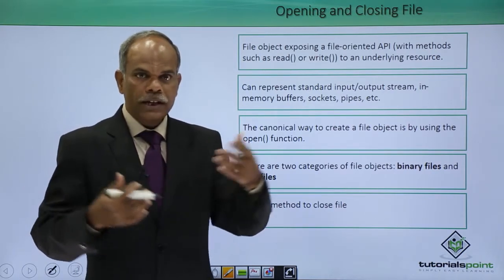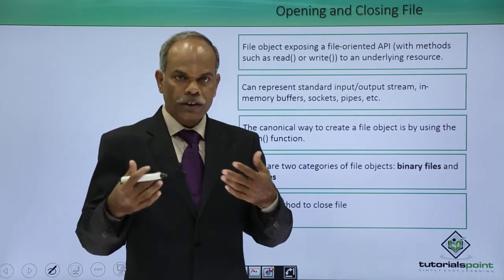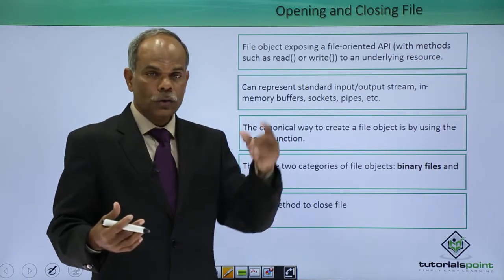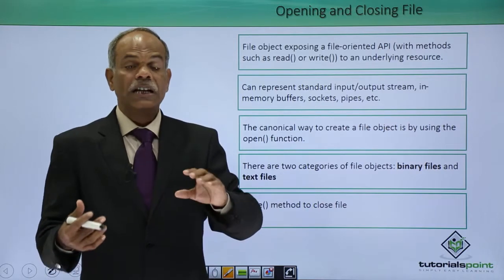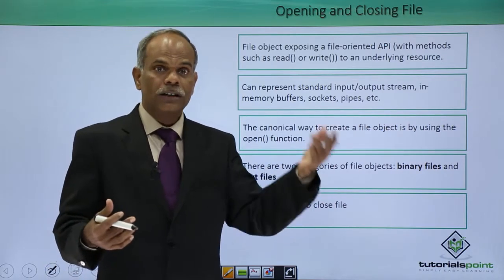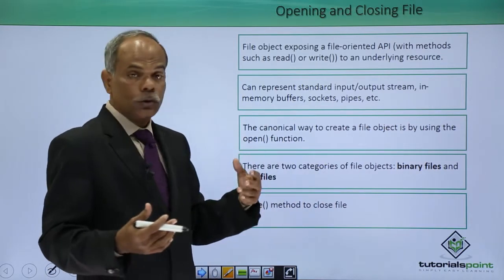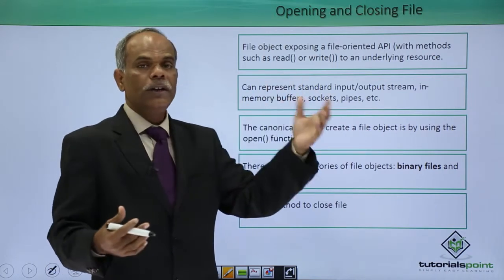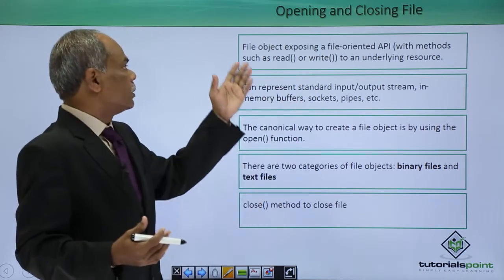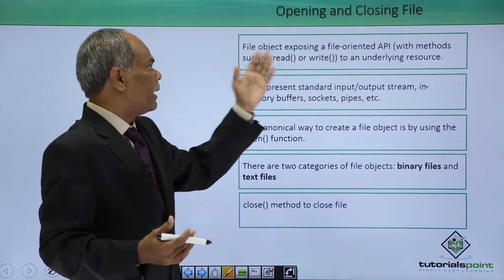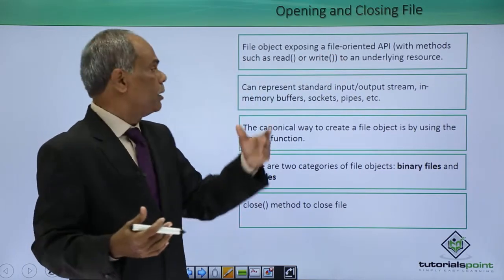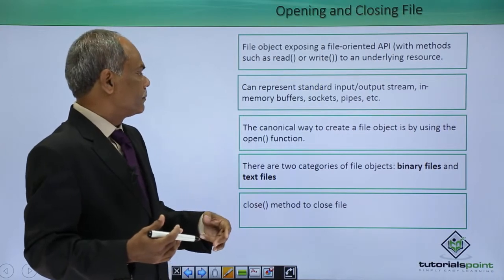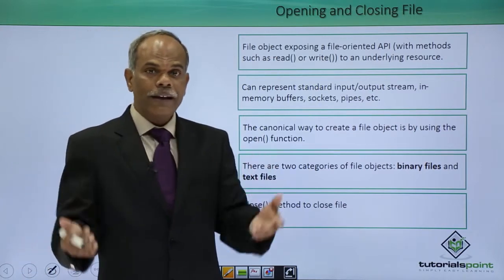In order to communicate with these input and output devices which are alternate to the default ones, you have to use the file-oriented API. The file-oriented API is exposed by declaring a file object. How to create the file object?